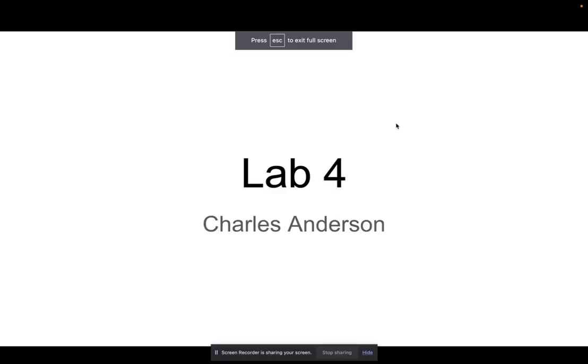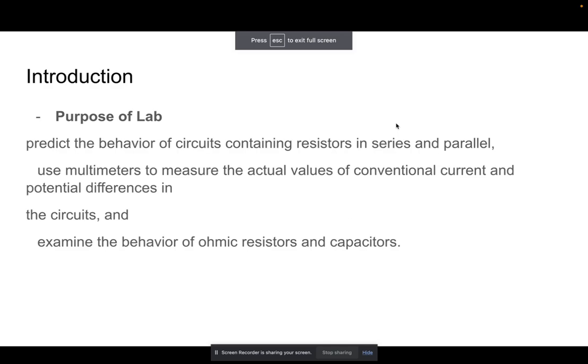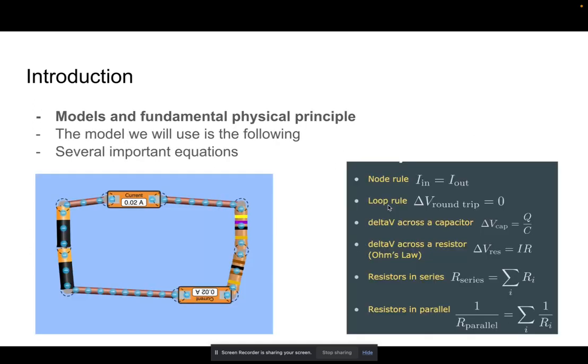Hi, my name is Charles Anderson, and I'm going to present Lab 4. The purpose of this lab is to predict the behavior of circuits containing resistors in series and parallel, use a multimeter to measure actual values of conventional current and potential differences, and examine the behavior of ohmic resistors and capacitors.